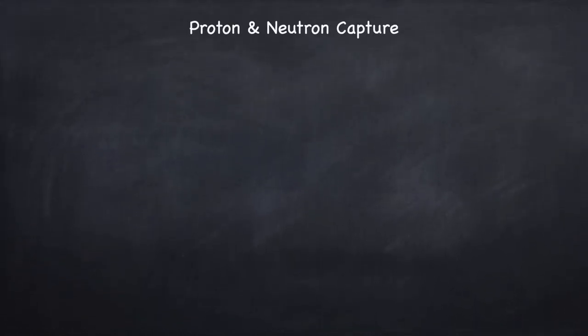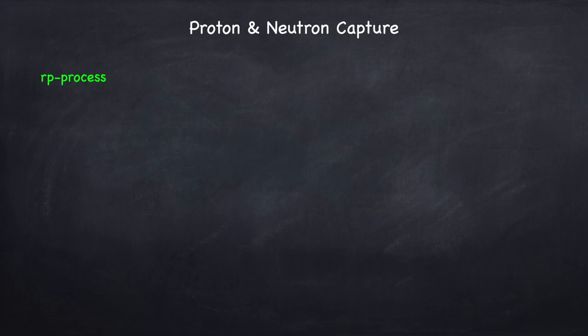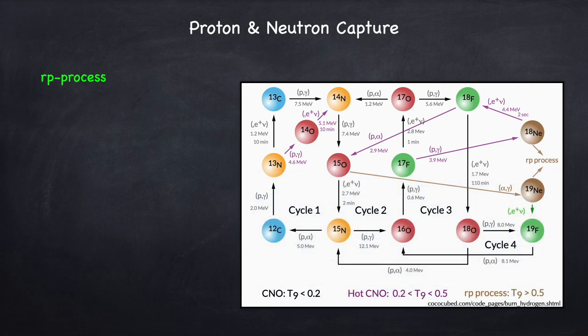Essentially, there are two different mechanisms by which we can fuse beyond iron. One is proton capture, and the other is neutron capture. Let's start off with proton capture. This is called the RP process, which stands for rapid proton. I briefly touched on the RP process in Stellar Physics 5E when I covered the CNO cycle.